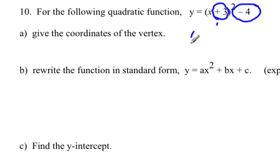So our vertex is going to be at negative 3, and our k value is negative 4. So our vertex will be at negative 3, negative 4.